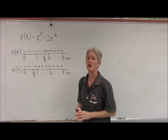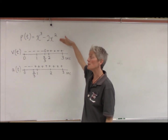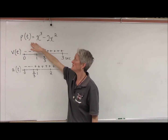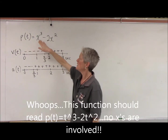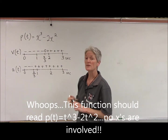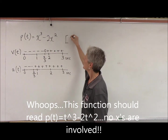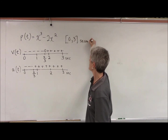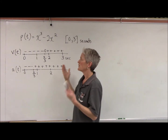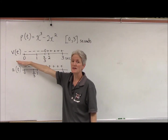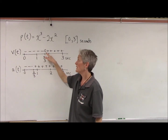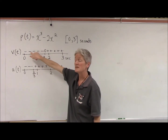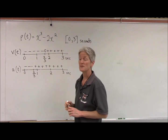If you remember where we left off, we were looking at the motion of a particle that followed this position function — x cubed minus 2x squared — over the interval from 0 seconds to 3 seconds. In the last video, we found the first derivative of the position, which was velocity, found our critical points where the velocity was 0, and then did some analysis to see when velocity was negative and when it was positive.